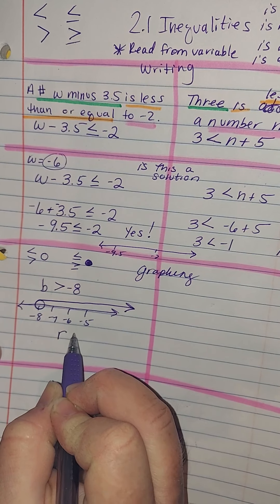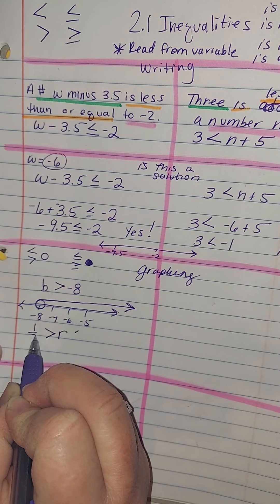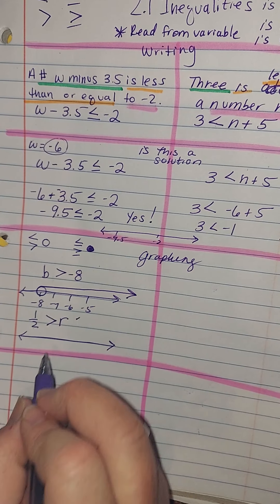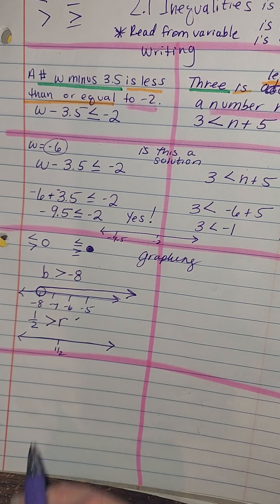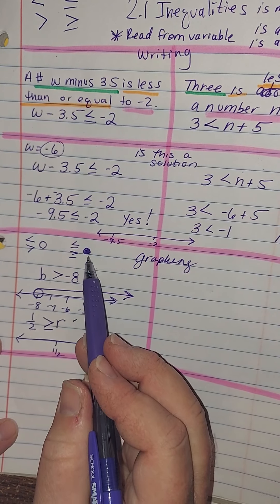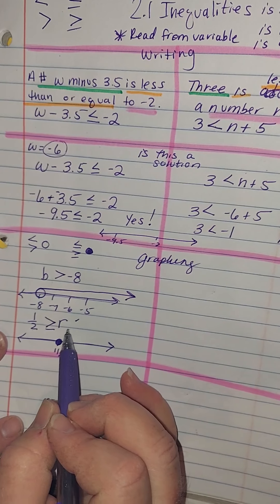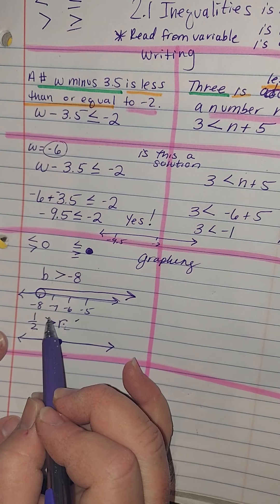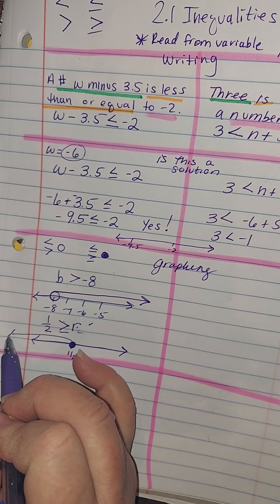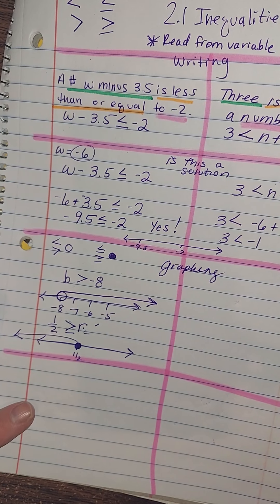Let's do another example with the variable on the other side, just to show you how following the arrow doesn't work. I'll put a half here with an equal to — so solid circle. Read it from the variable: r is less than or equal to — less is to the left. See how you don't want to follow the arrow? Be careful, always read it from the variable.